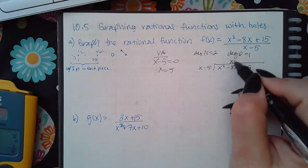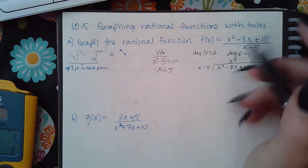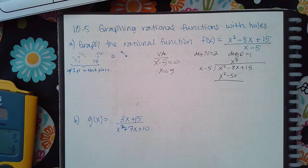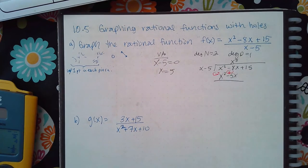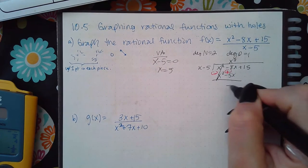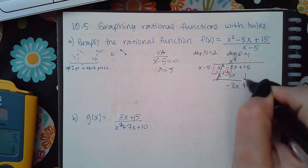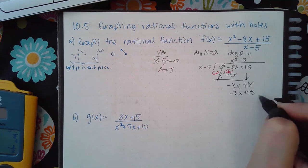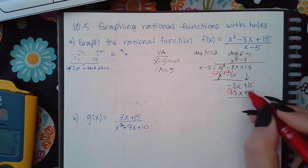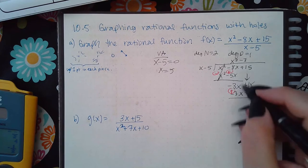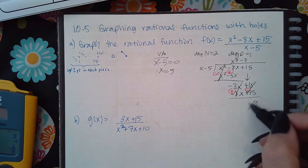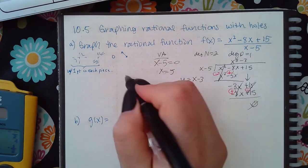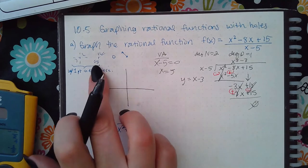So x goes in there: x times x is x², x times negative 5 is negative 5x. Change the signs, these go away, this becomes negative 3x plus 15. I get negative 3x plus 15, and this becomes a remainder of zero. The slant asymptote is going to be y equals x minus 3.